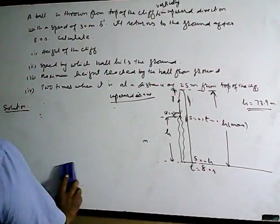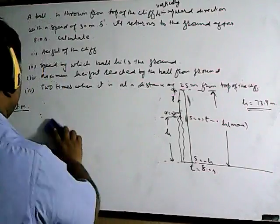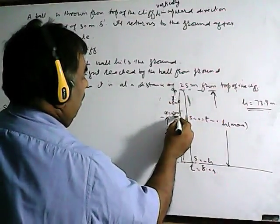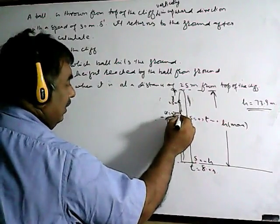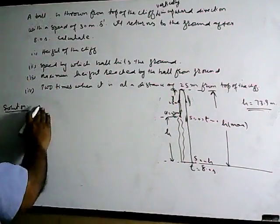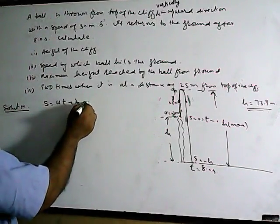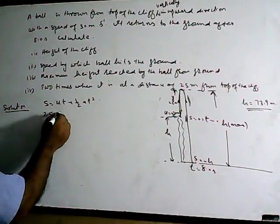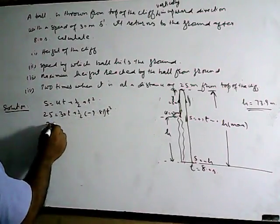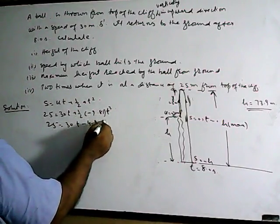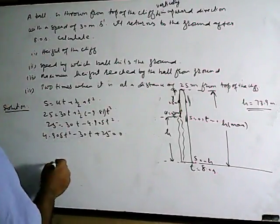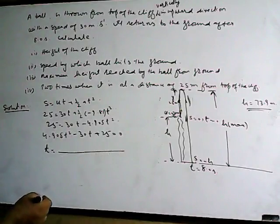Part 4: find the two times when the ball is at a distance of 25 meters from the top of the cliff. There will be two times — once when the ball is rising and once when it is coming down. Using s = ut + ½at² with s = 25: 25 = 30t − 4.905t², which gives 4.905t² − 30t + 25 = 0.